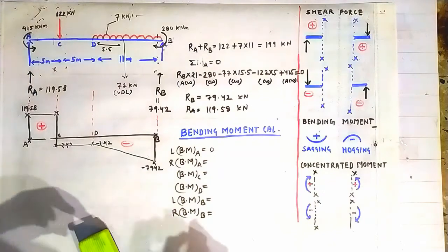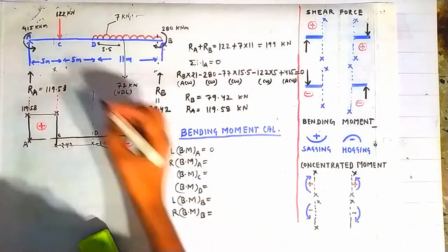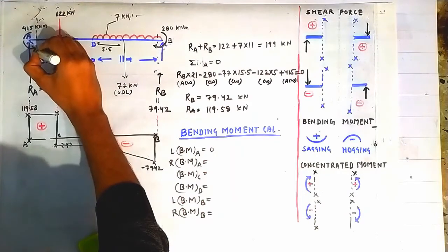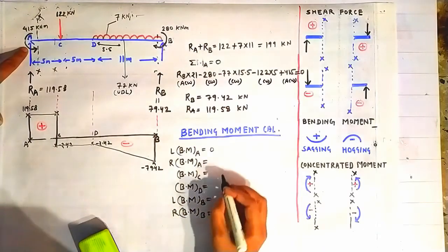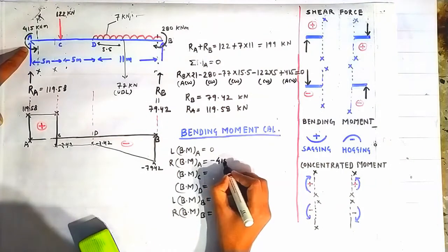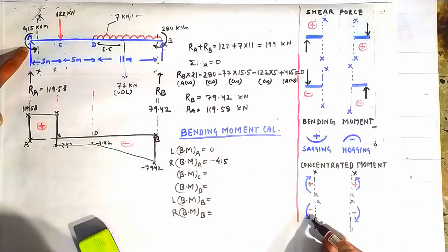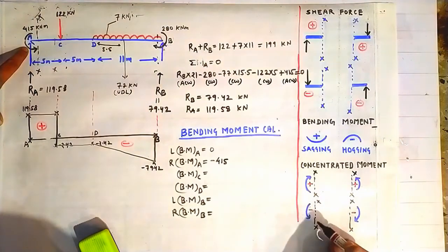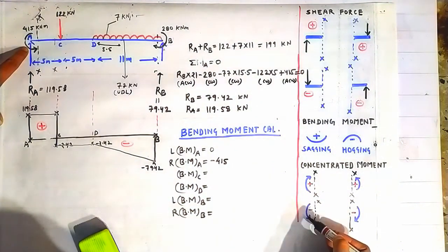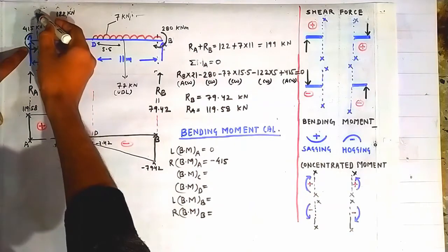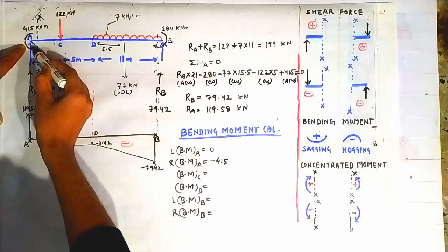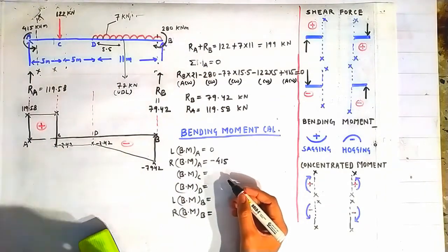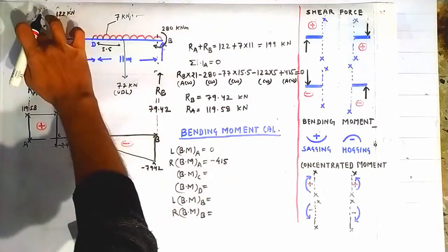For bending moment on the right side of point A, construct a section through point A. Because of the concentrated moment, there will be a moment of magnitude −415 kN·m — negative because the concentrated moment acts on the left side of section XX going in the anticlockwise direction, which is taken as negative per the sign convention.